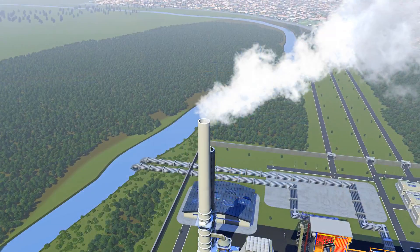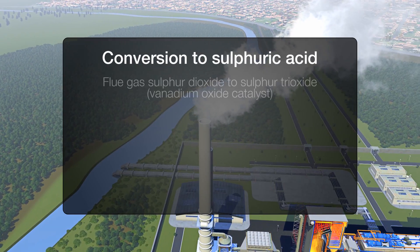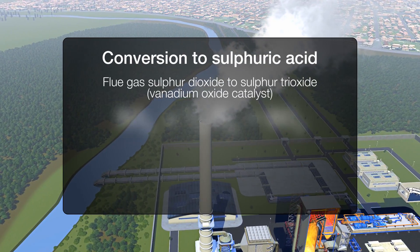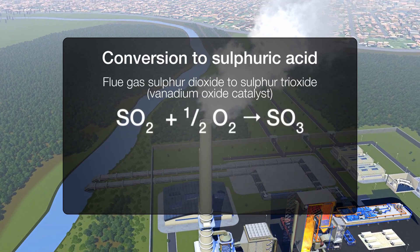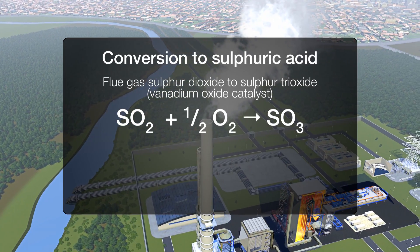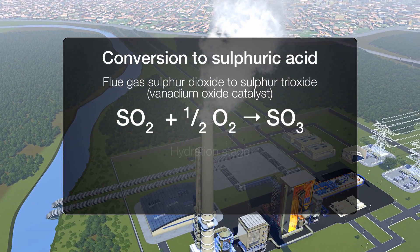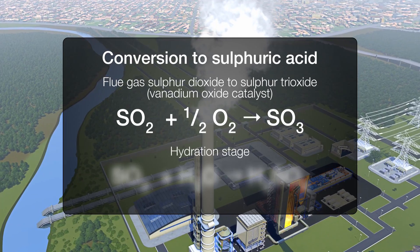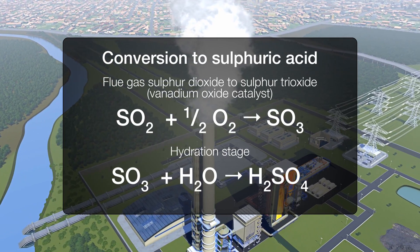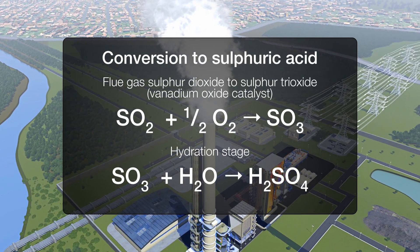In the case of sulfuric acid, adding excess air to the sulfur dioxide and vanadium oxide converts it to sulfur trioxide (SO₃). When combined with water, this produces H₂SO₄, or sulfuric acid.